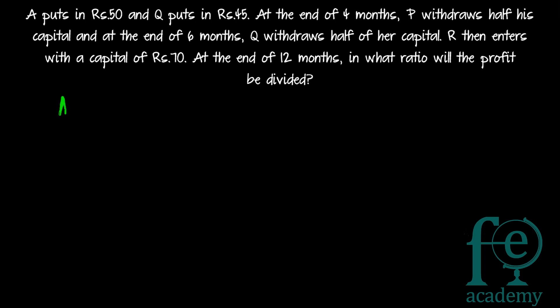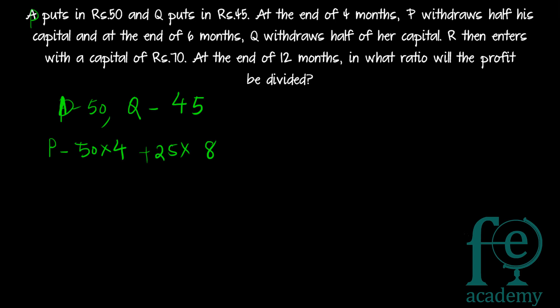P is putting in 50 rupees and Q is putting in 45 rupees. P withdraws half his capital at the end of four months. So P invests 50 rupees for the first four months, and after withdrawing half, 25 rupees remain for the remaining eight months. So the total contribution of P is fifty into four plus twenty-five into eight.